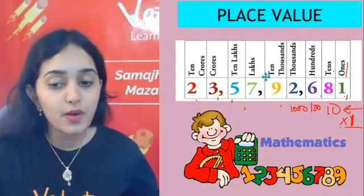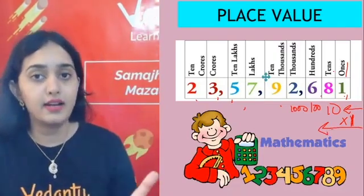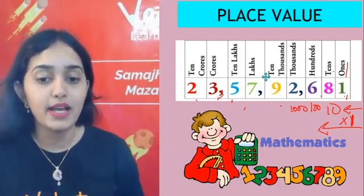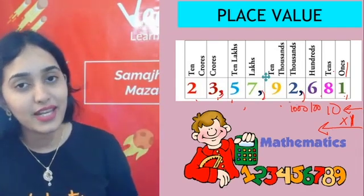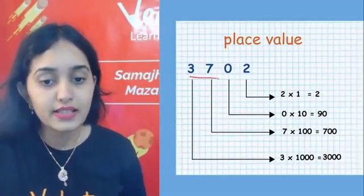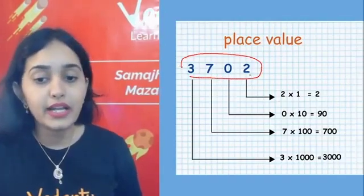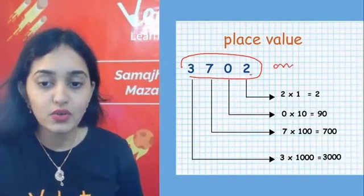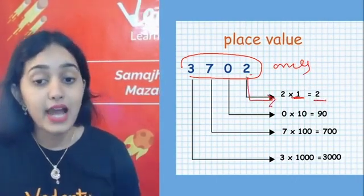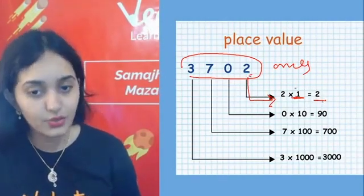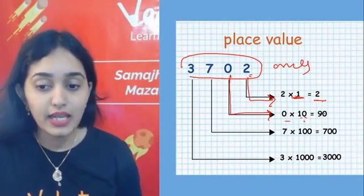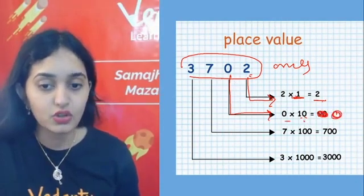How do you write place value? From the right-hand side: 1s, 10s, 100s, 1000, 10,000, lakh, ten lakh, crore, ten crore. Now if I ask you to write the place value of all digits in 3,702: the digit 2 is at the ones place, so its value is 2 × 1 = 2. The digit 0 is at the tens place, so 0 × 10 = 0. The digit 7 is at the hundreds place, so 7 × 100 = 700.